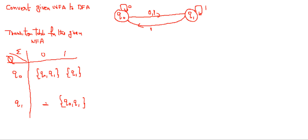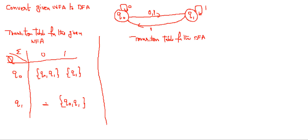Now from this transition table, we have to draw the transition table for the DFA. We will start with the initial state of the NFA, which is q0. The same state will be the initial state in the DFA also.